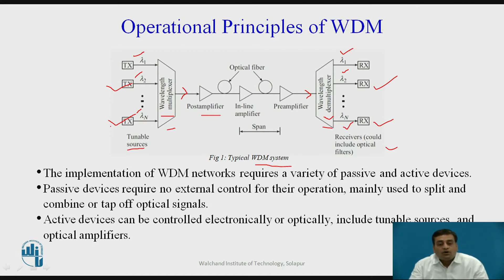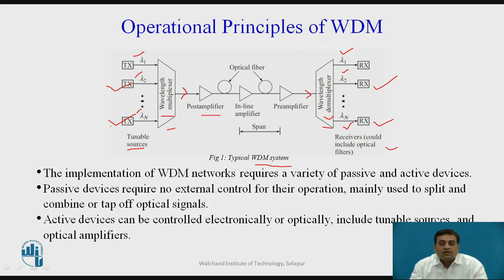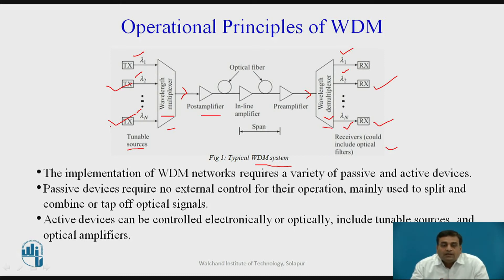The implementation of WDM networks requires a variety of passive and active devices. Passive devices require no external control and are mainly used to split, combine, or tap optical signals or power. Active devices can be controlled electronically or optically and include tunable sources and optical amplifiers.